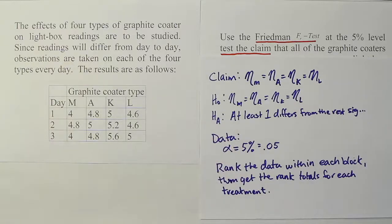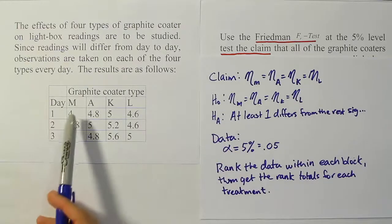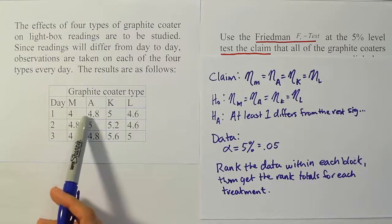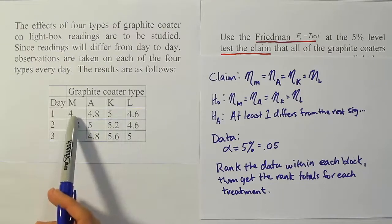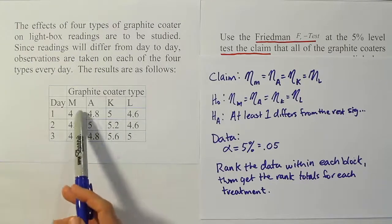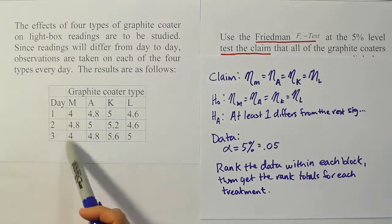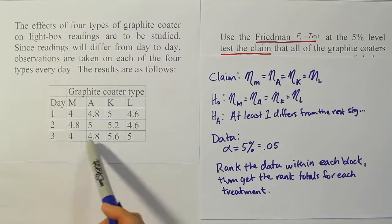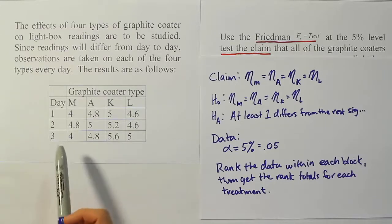And the idea behind the procedure is simply that if M, graphite coater M, always had the smallest yield or output here, if it always had the smallest reading, then it would always get the rank one in theory. And then when you totaled up its ranks, it would be very low compared to the other values that didn't always get one. And so that's the kind of way that we'll distinguish between the different graphite coater types in this problem. All right, so let's go get our data and do that in our next step.